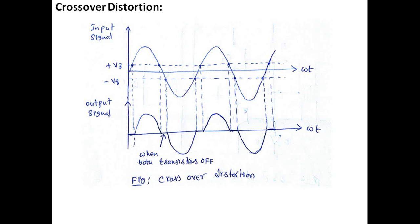Crossover distortion occurs because in a practical transistor, VBE must reach 0.7V before the transistor turns on. Until the input at the base reaches this threshold voltage V_gamma = 0.7V, the transistor remains off and there is no output signal. Once VBE exceeds 0.7V, the transistor turns on and the input signal passes to the output.